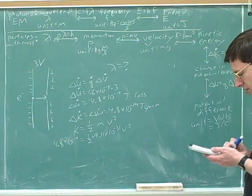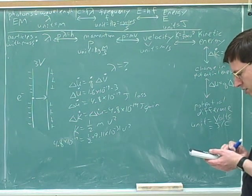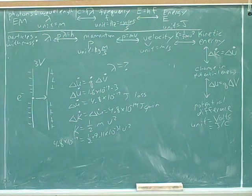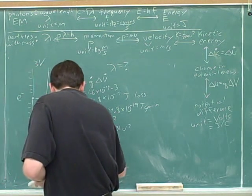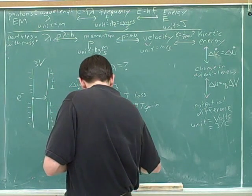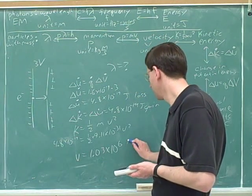Okay, so then, so 1.03 times 10 to the 6th. Oh, did you take the square root? Yeah. That was probably my mistake then. 1.03 times 10 to the 6th, my mistake. Good. And this would be meters per second. Okay, good.